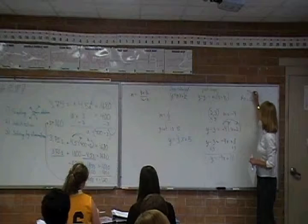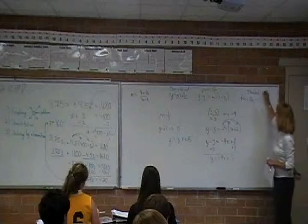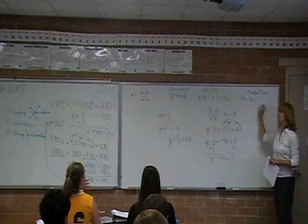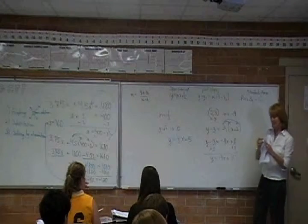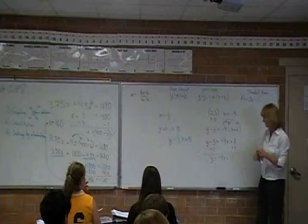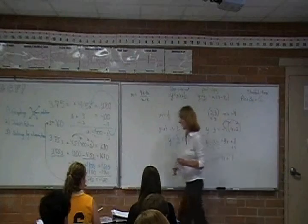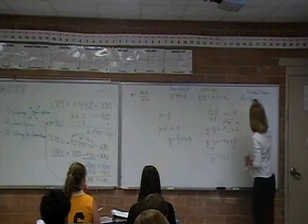And this is standard form. Standard form has x and y on the same side. You're not allowed any decimals or fractions. A, B, and C are integers. Integers are the whole numbers and their opposites. And 0. And A and B can't be 0 at the same time. That would leave it as 0 equals another number, which wouldn't make any sense.